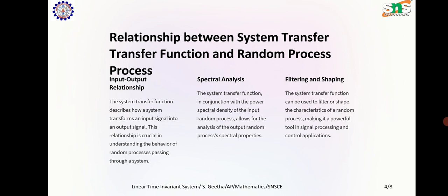Relationship between system transfer function and random processes: The system transfer function describes how a system transforms an input signal into an output signal. This relationship is crucial in understanding the behavior of random processes passing through a system. Spectral analysis — the system transfer function, in conjunction with the power spectral density of the input random process, allows for the analysis of output random process spectral properties. Filtering and shaping — the system transfer function can be used to filter or shape the characteristics of a random process, making it a powerful tool in signal processing and control applications.